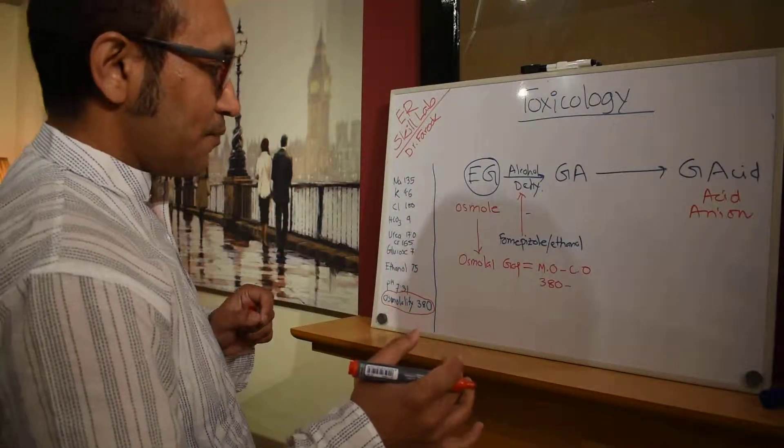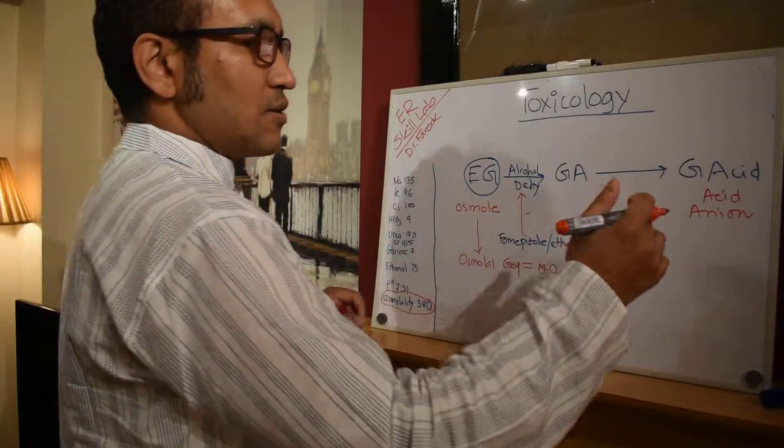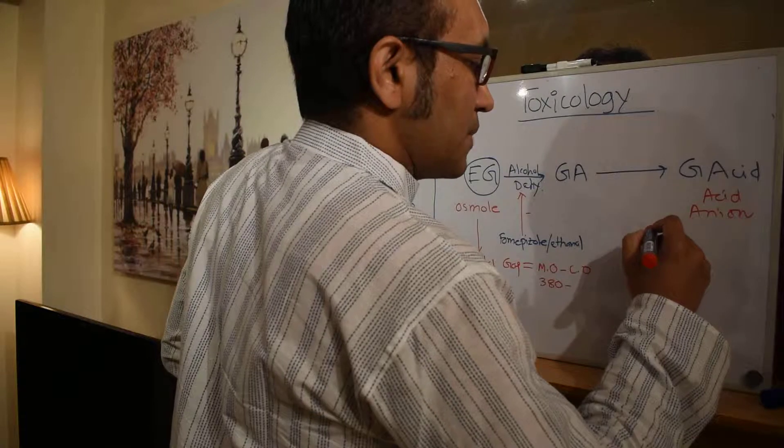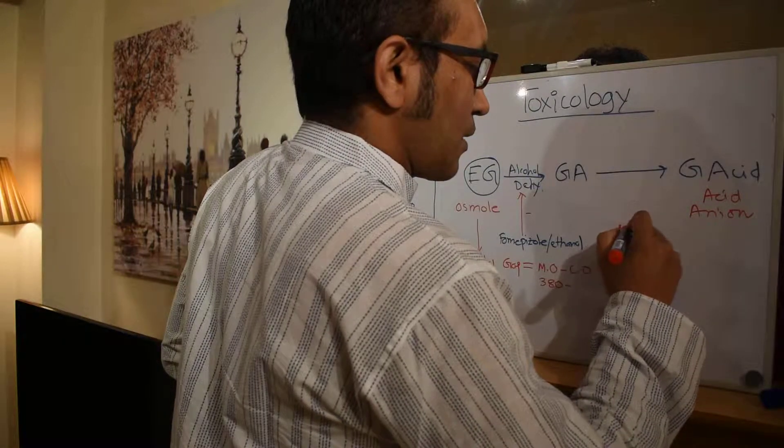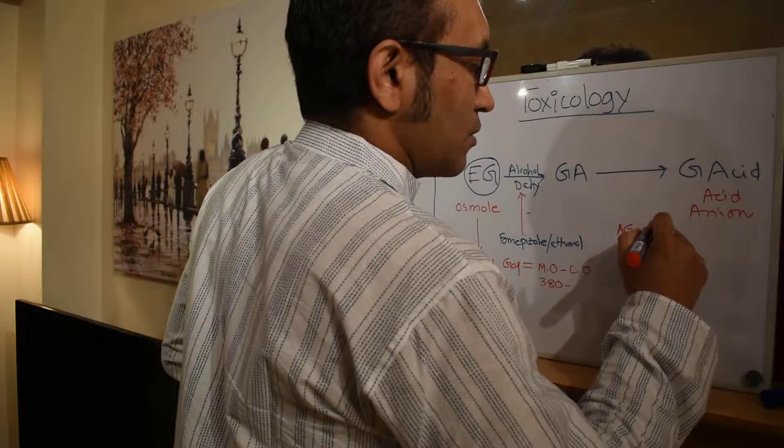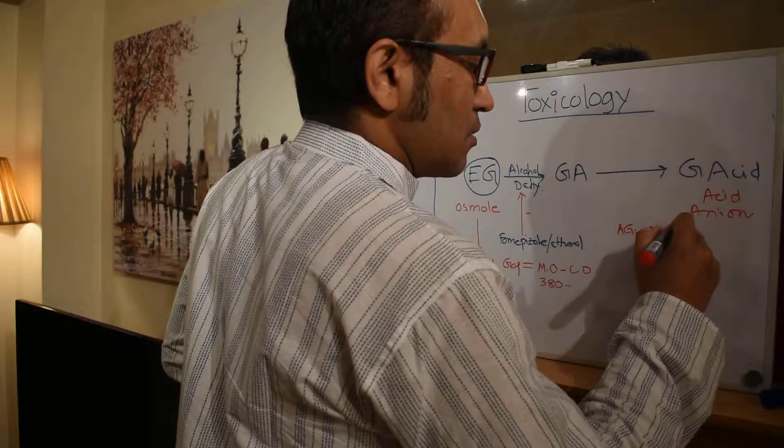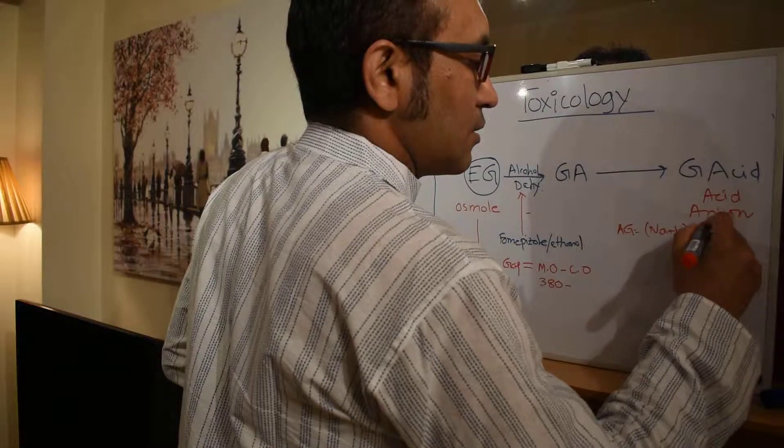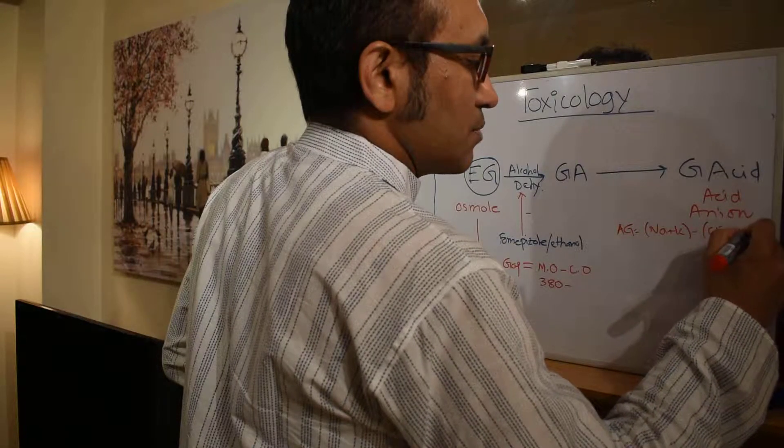And how do you calculate anion gap, we all know. So anion gap is sodium plus potassium minus chloride plus bicarbonate.